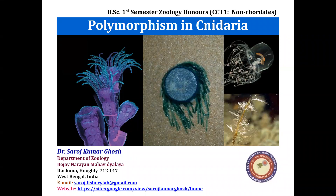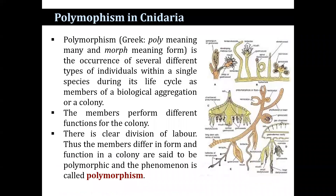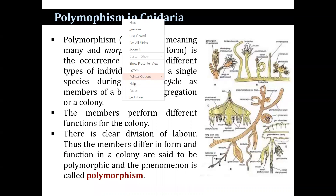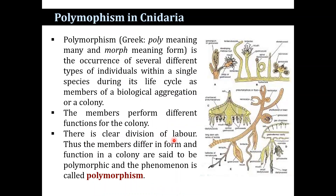I am going to discuss the topic of polymorphism in Cnidaria. Polymorphism consists of two words: poly, meaning many, and morph, meaning form. Polymorphism is the occurrence of several different types of individuals within a single species during its life cycle, as members of a biological aggregation or colony. The members perform different functions for the colony, with a clear division of labor. Thus, members that differ in form and function in a colony are said to be polymorphic, and this phenomenon is known as polymorphism.